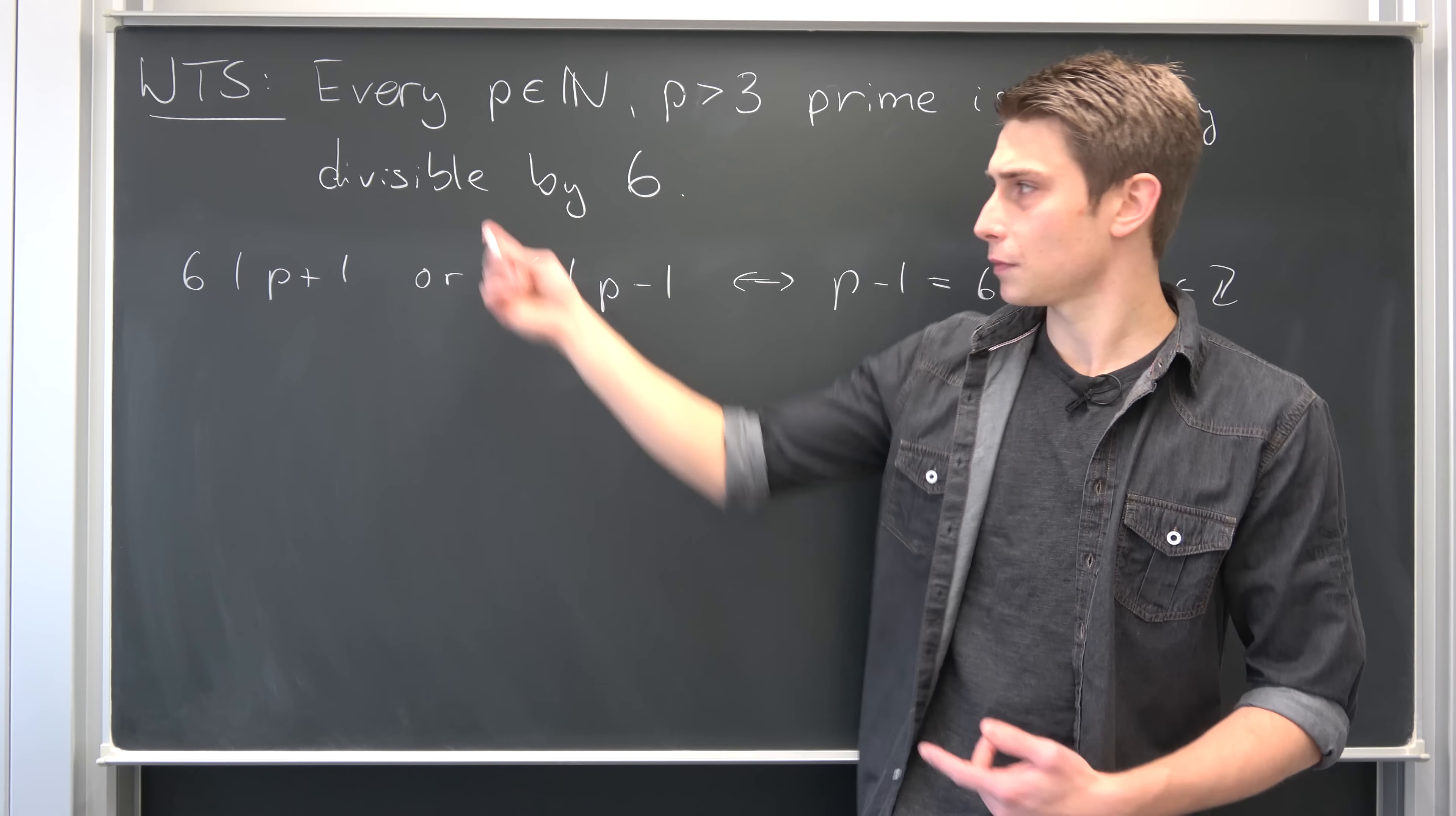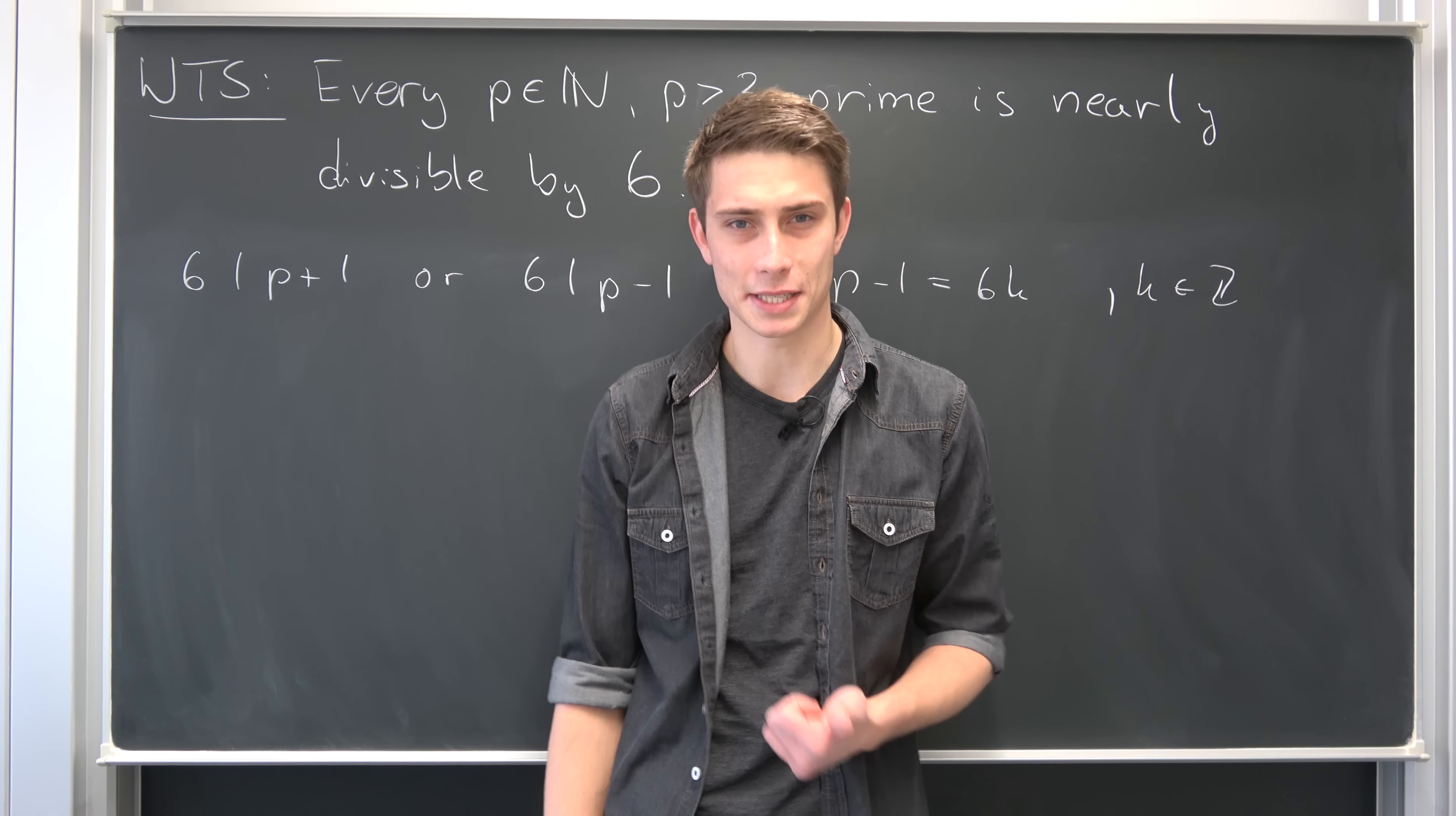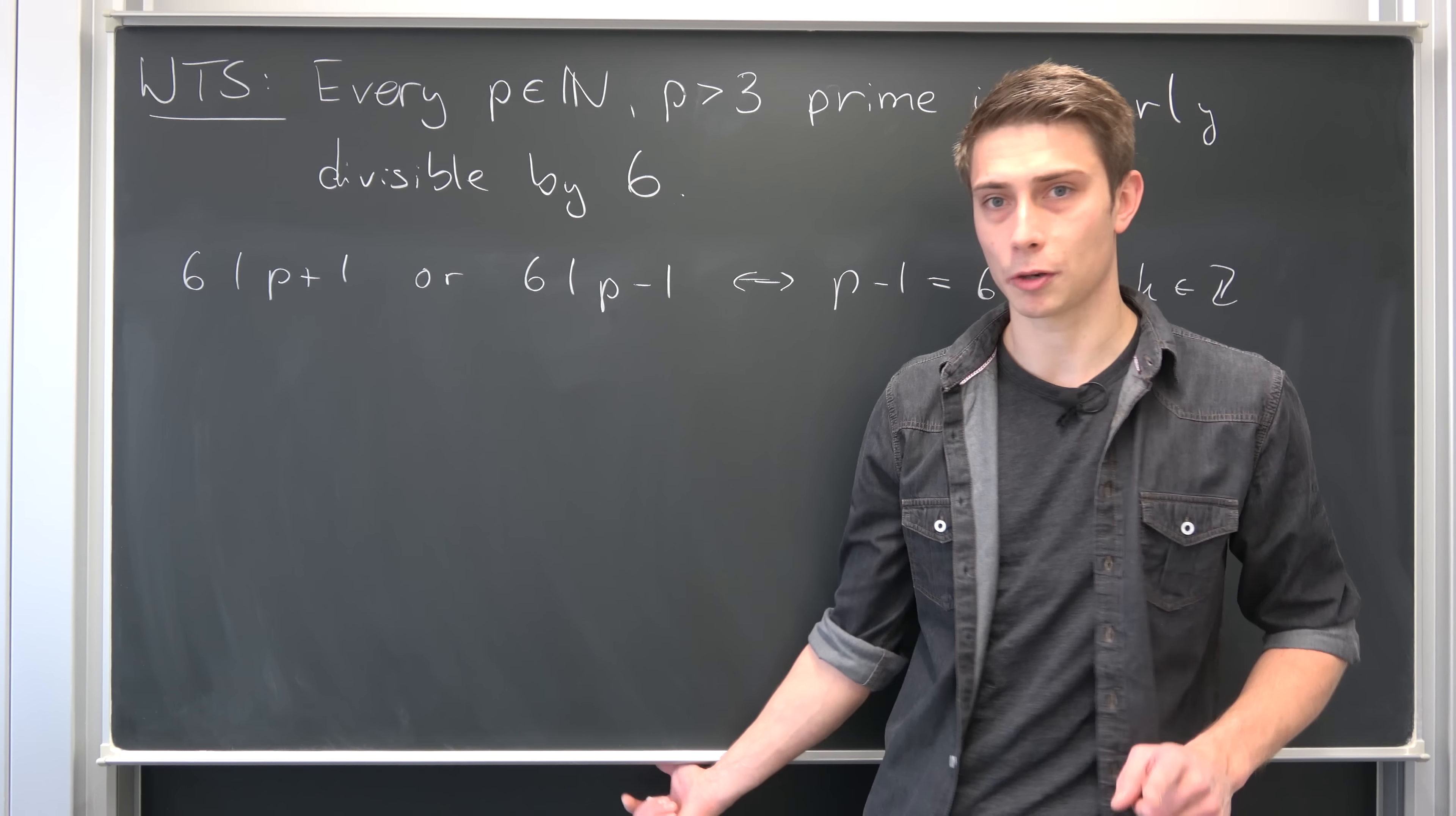To prove this statement, we have to consider 6 main cases. Let's take a look at some random arbitrary integer. Later on we want it to be a prime number, we're going to restrict it. Either an integer is divisible by 6, it's 1 more than a multiple of 6, 2 more than a multiple of 6, and so on, until 5 more than a multiple of 6. Why are those all the cases? We're going to talk about this in a second.